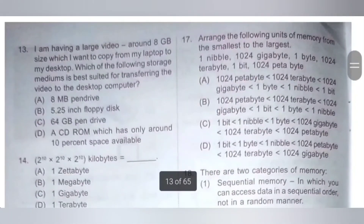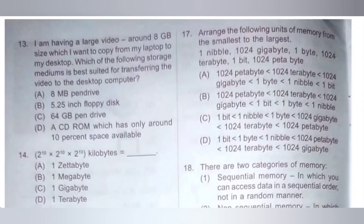Seventeenth question. Arrange the following units of memory from smallest to largest: 1 nibble, 1024 gigabyte, 1 byte, 1024 terabyte, 1 bit, 1024 petabyte. A group of 4 bits is 1 nibble and 2 nibbles equals 1 byte. So the order is: 1 bit, then 1 nibble, then 1 byte, then 1024 gigabyte, then 1024 terabyte, then 1024 petabyte. Option C is the correct answer.